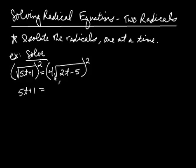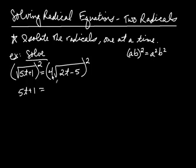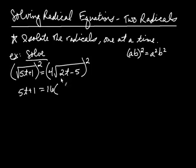On the right-hand side, this is a product — it's 4 multiplied by the square root of 2t minus 5. When you have a times b and you're squaring that product, the square applies to both the a and the b: you get a squared times b squared. Likewise here, 4 squared is 16, and the square root of 2t minus 5, squared, is just 2t minus 5.